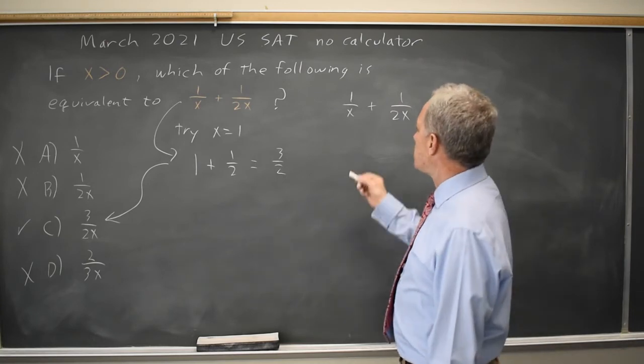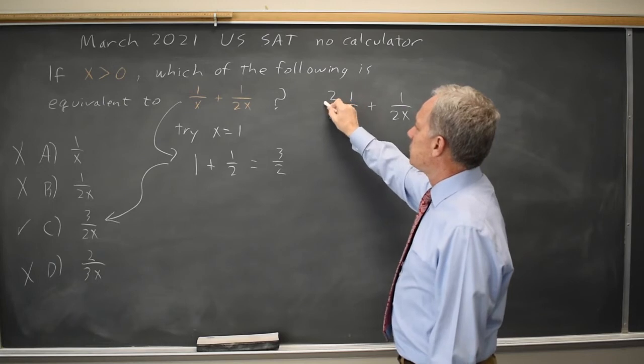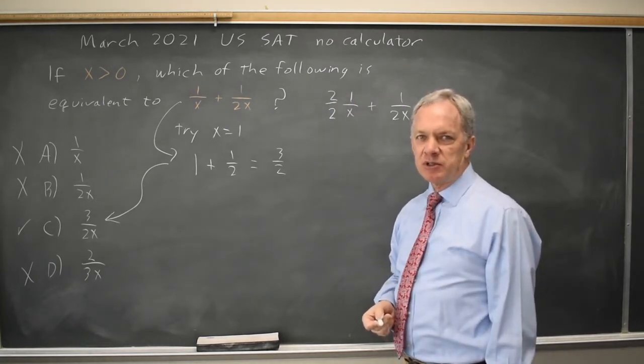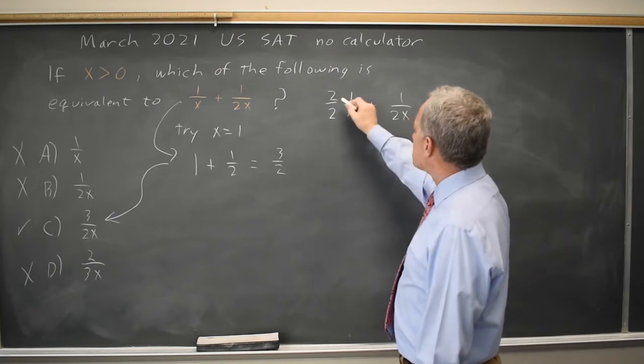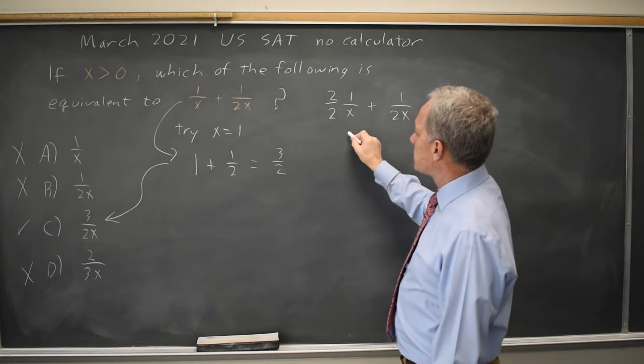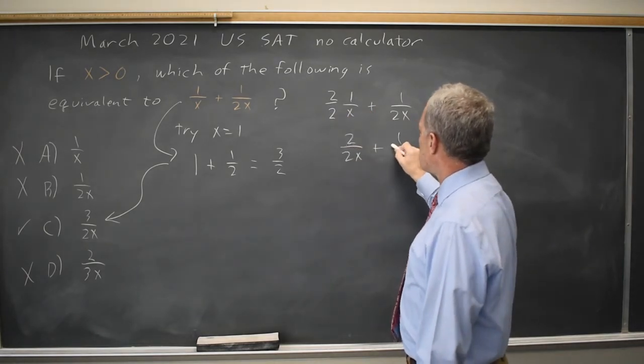To get a common denominator, I have to multiply this denominator by 2, which means multiply the numerator by 2. I'm multiplying by 2 halves, and anything over itself is 1, so I have not changed the value. To multiply fractions, I multiply numerators, so 2 times 1 is 2, 2 times x is 2x, and then plus 1 over 2x.